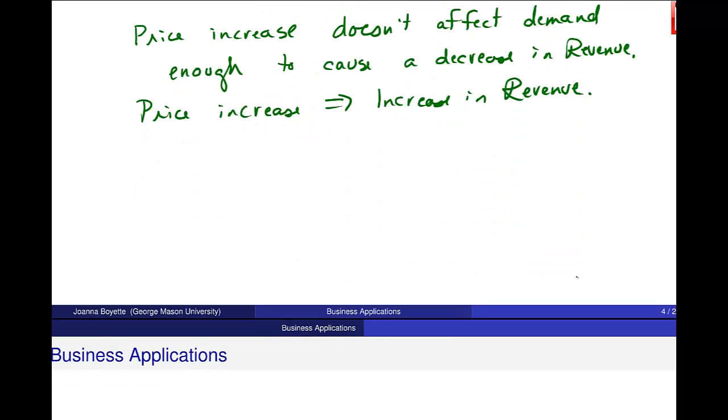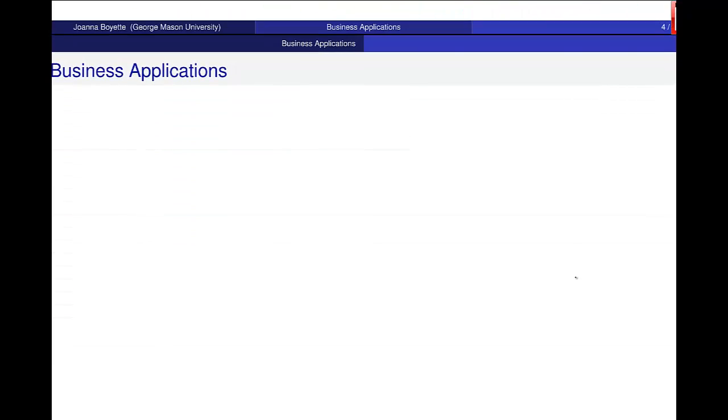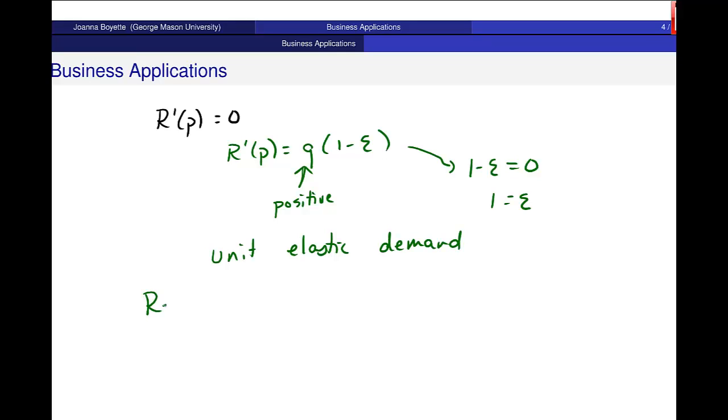There's one more case - what happens when I get r prime equal to 0? I want to look at r prime of p equals q times 1 minus epsilon. If I know that this is a positive quantity, I have actual demand, then in order for this to happen, 1 minus this point elasticity has to be 0, and elasticity is 1. We call this unit elastic demand, and it means that revenue is not affected by a change in price.